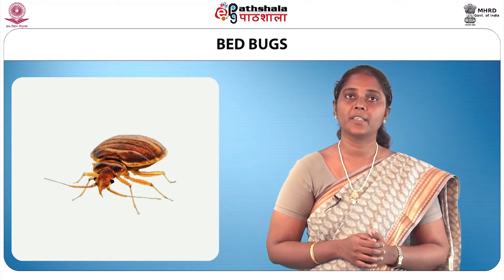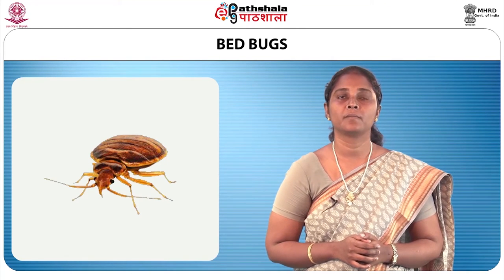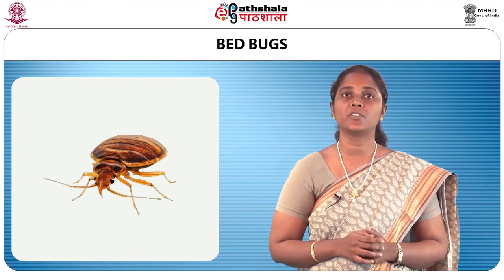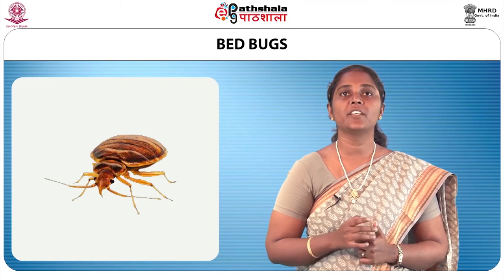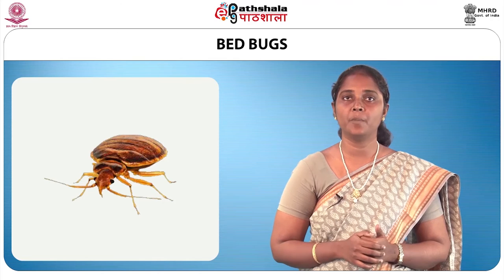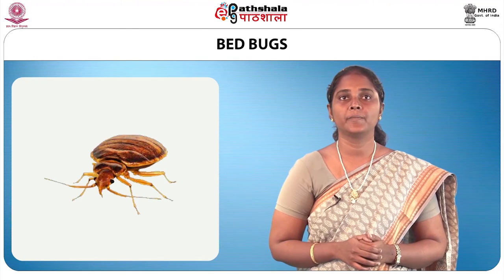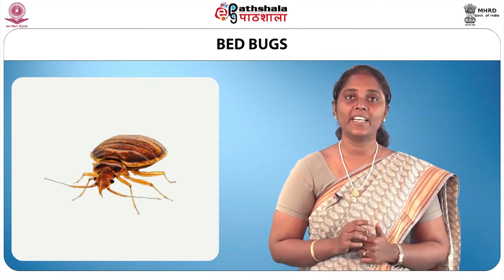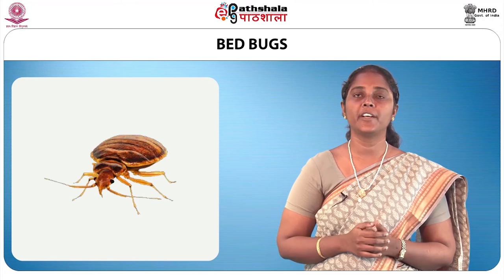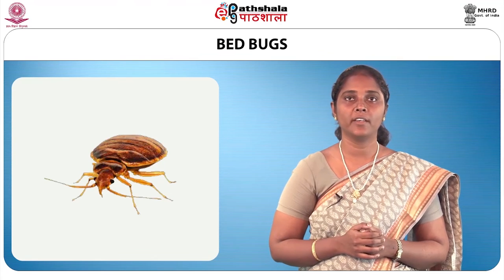Bed bugs are tiny parasitic creatures that feed on the blood of humans. They are generally present on beds, clothes, furniture and upholstery, and are active only at night. Their size varies from 4 to 5 millimetres long, with a flat head and oval body, generally yellow to white in colour; matured ones are light red or brown in colour and give a very unpleasant odour. They can be prevented by fumigation, thick application of kerosene oil, or pouring boiling water into crevices.